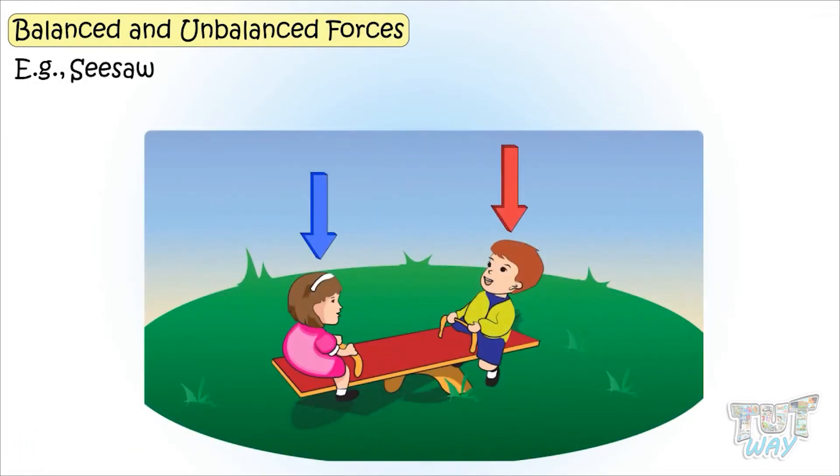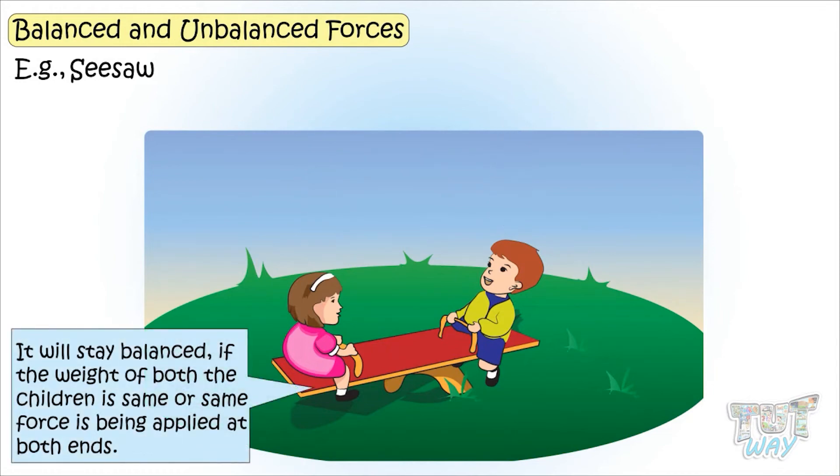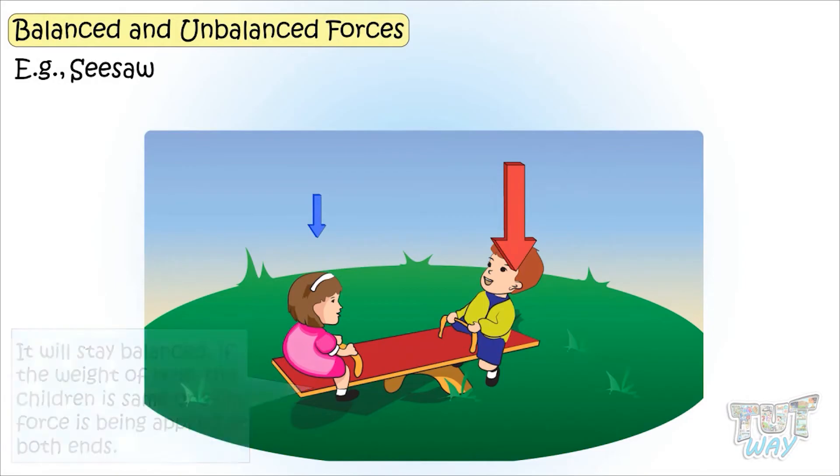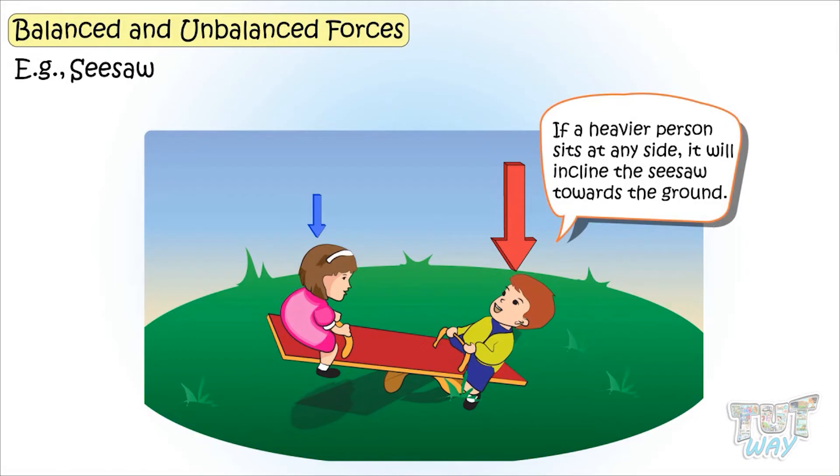Here is an example of a seesaw. It will stay balanced if the weight of both children is the same or the same force is applied at both ends. A heavier person sits at any side, it will incline the seesaw towards the ground. That is, unbalanced forces now applied to the seesaw. So the seesaw moved.